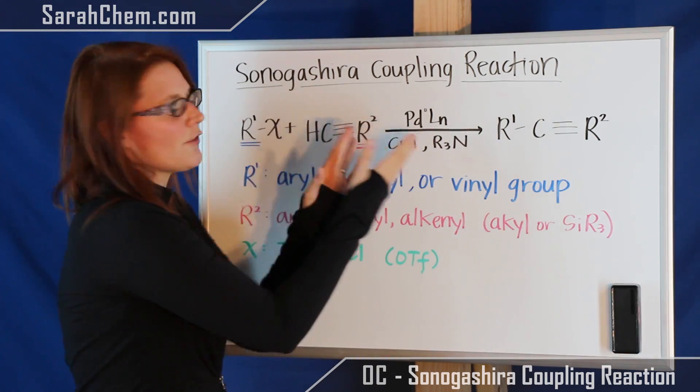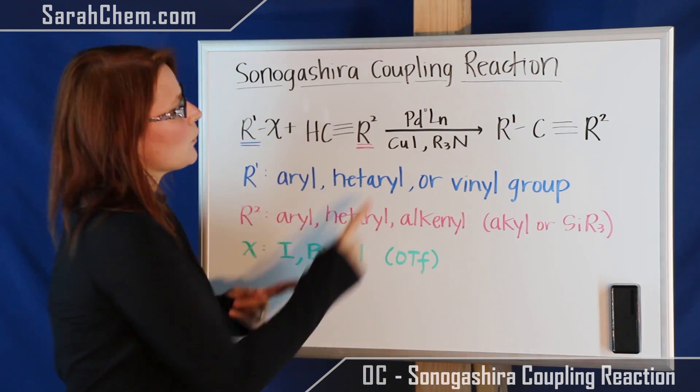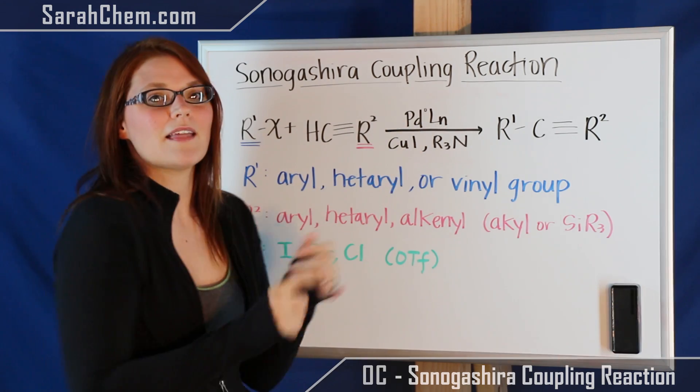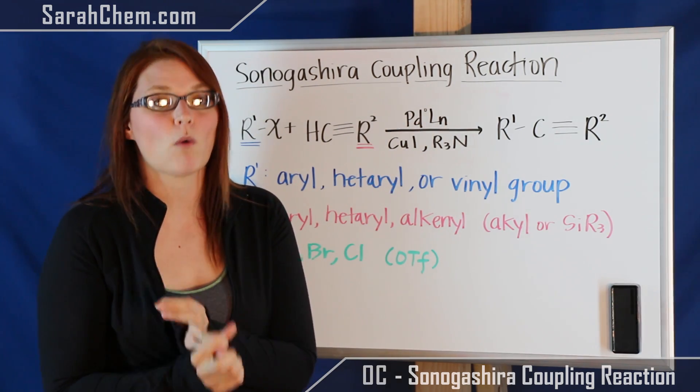Then what we're going to look at over here is everything that's added to the reaction to make these two actually join. So what we see is we have a palladium catalyst. So I put PdLn. That's because sometimes it's PdL2 and sometimes it can be PdL4.